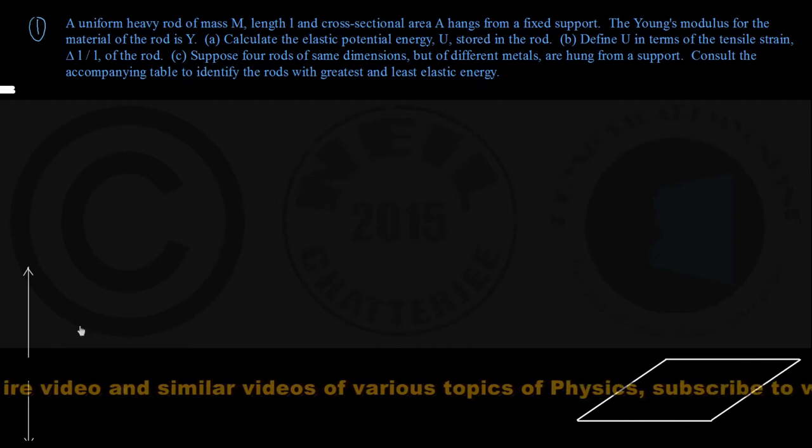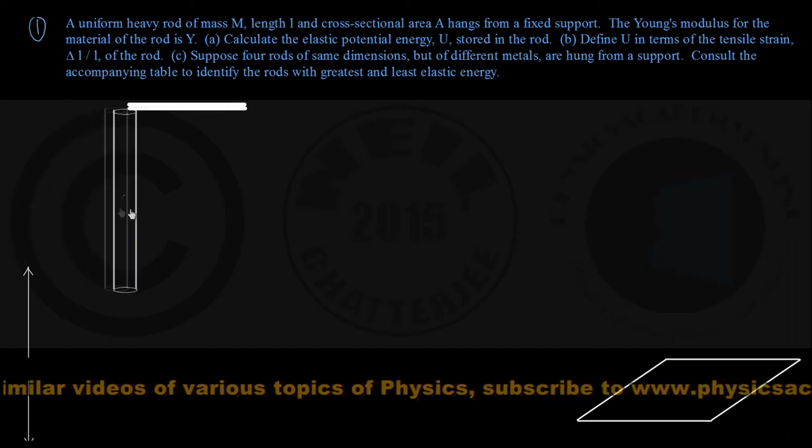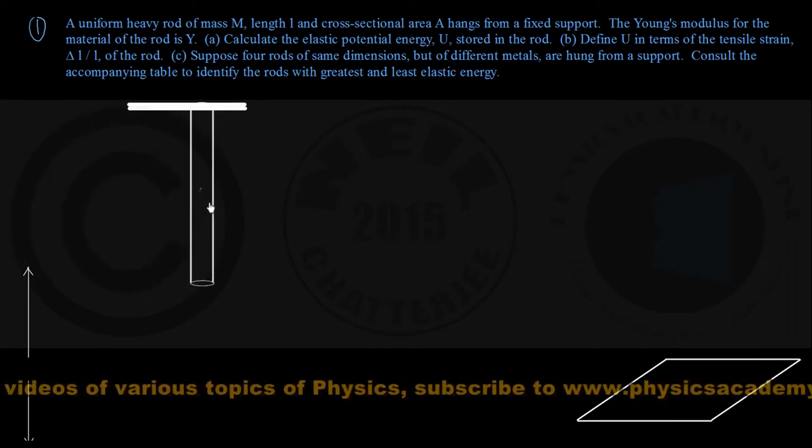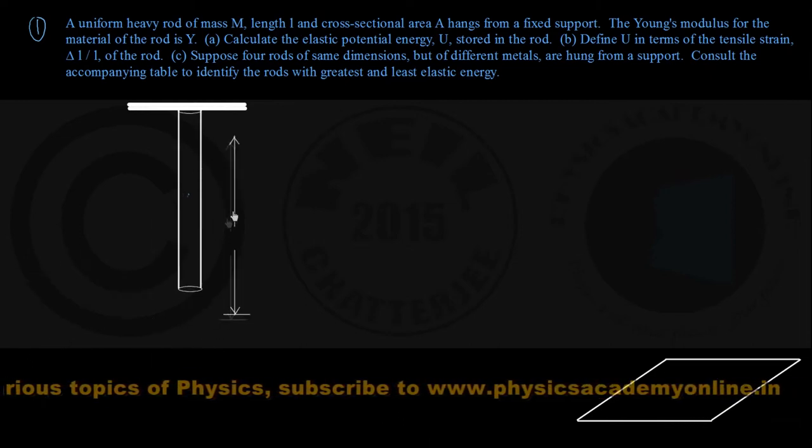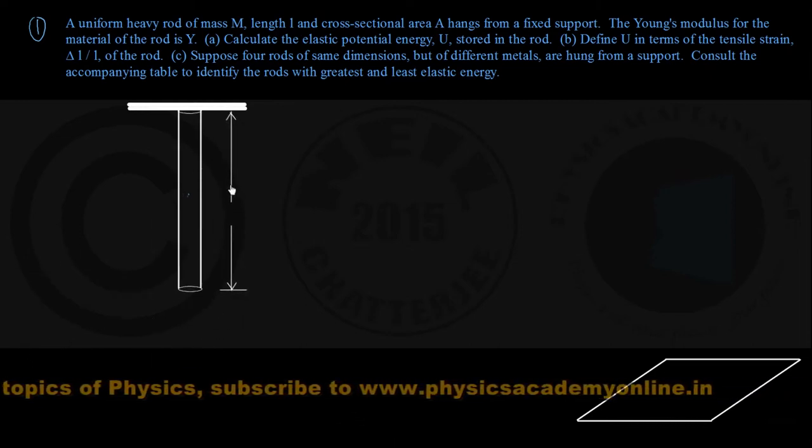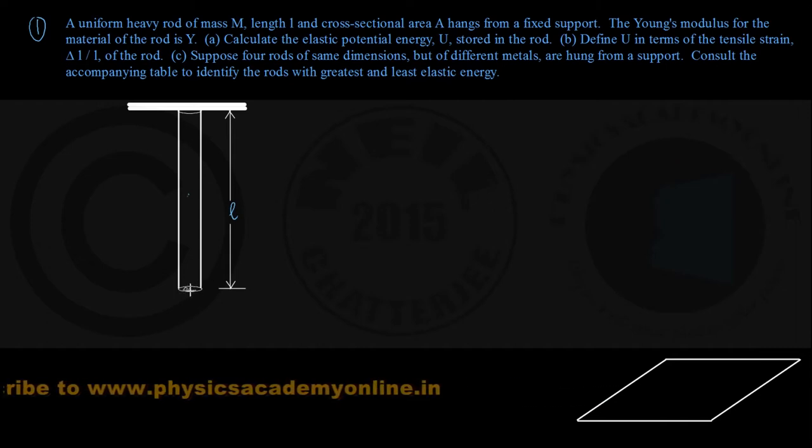So let us consider this heavy uniform rod suspended from a fixed support, that is a ceiling I am showing here. As they have said, the length of this rod is L. And they have also said the cross-sectional area of this rod is given to be A, length is L, mass is M, and of course Young's modulus is given to be Y.